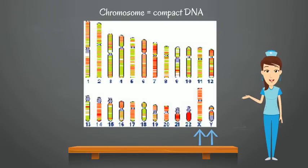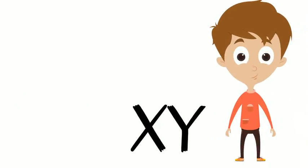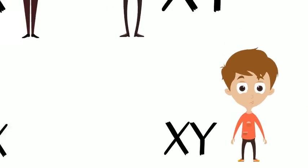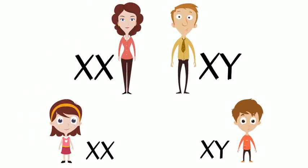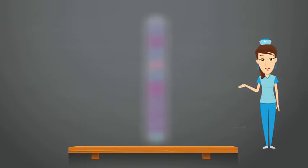These are the X and Y chromosomes. Girl cells contain two X chromosomes while boy cells contain one X and one Y chromosome. Each parent gives one chromosome to their baby resulting in a boy or a girl.